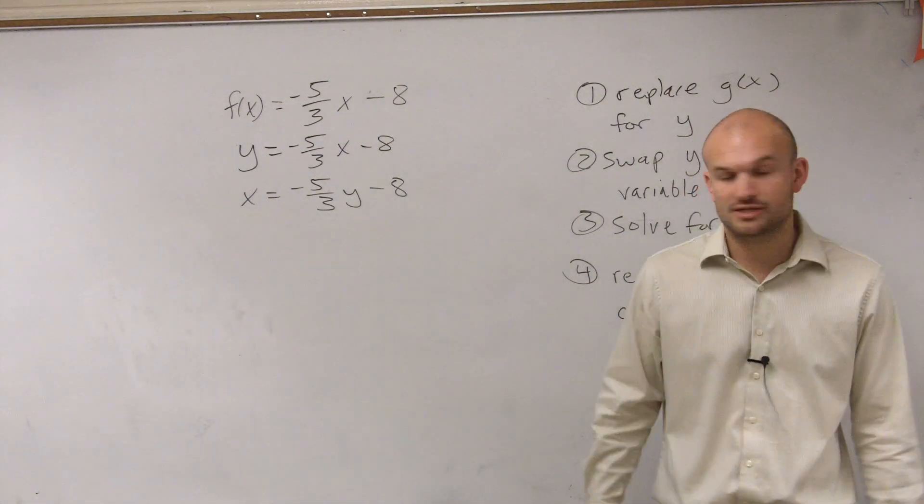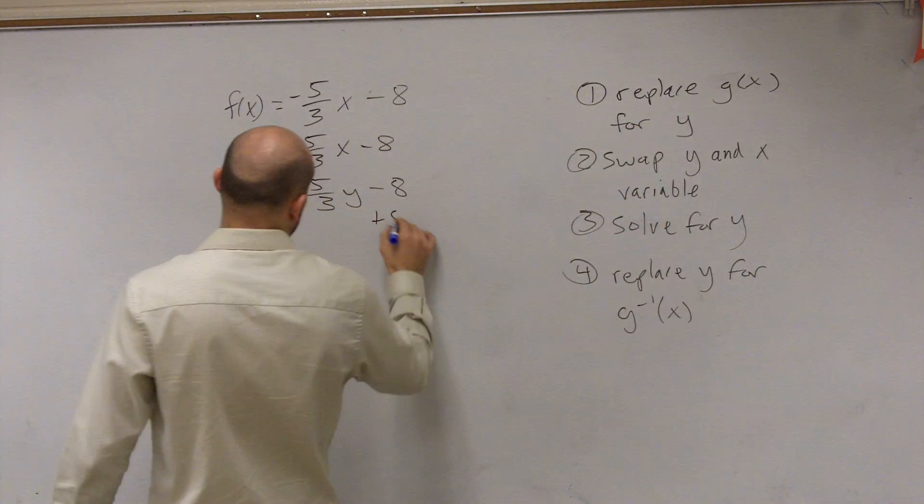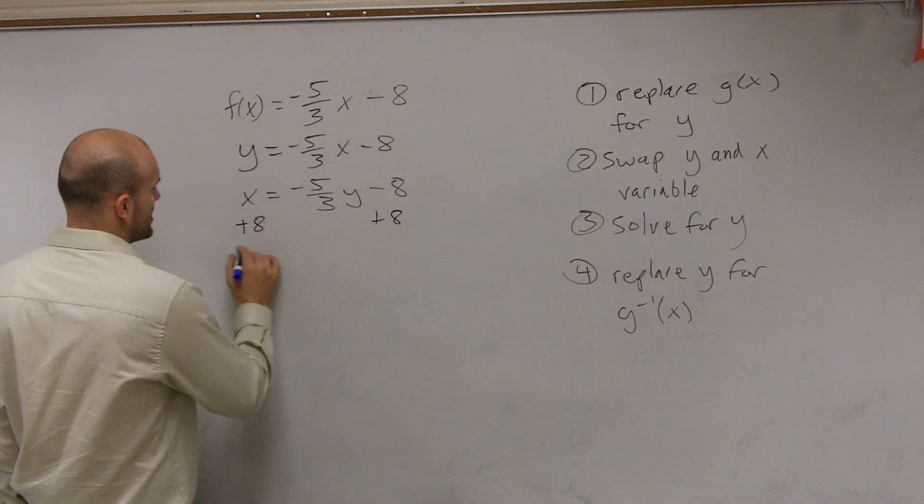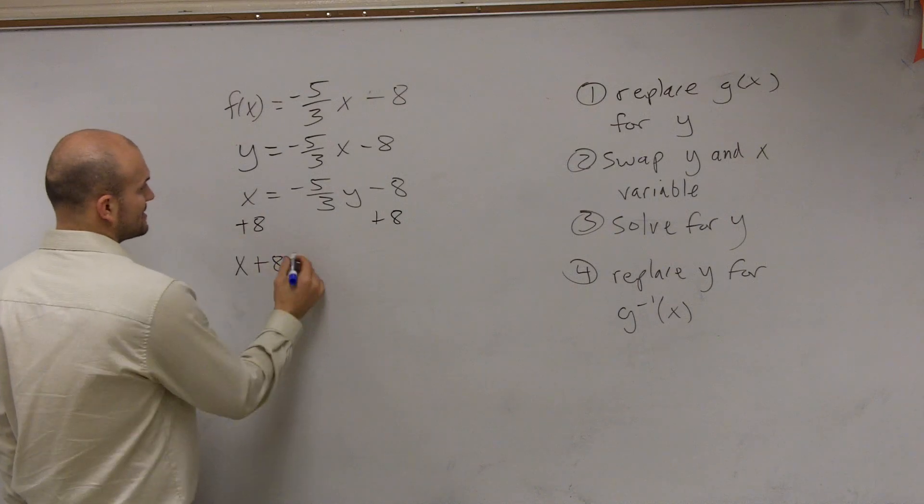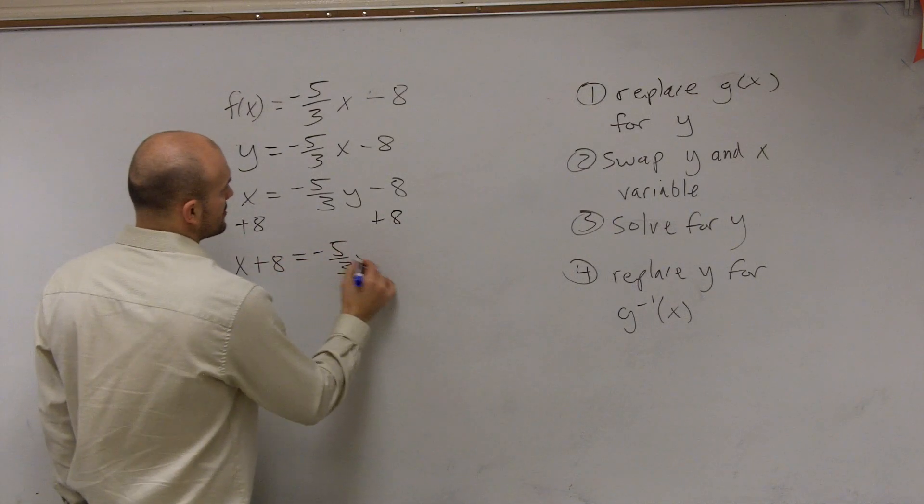The first thing we always undo is addition and subtraction. So to undo a subtraction I add an 8 to both sides. So I have x plus 8 equals negative 5 thirds y.